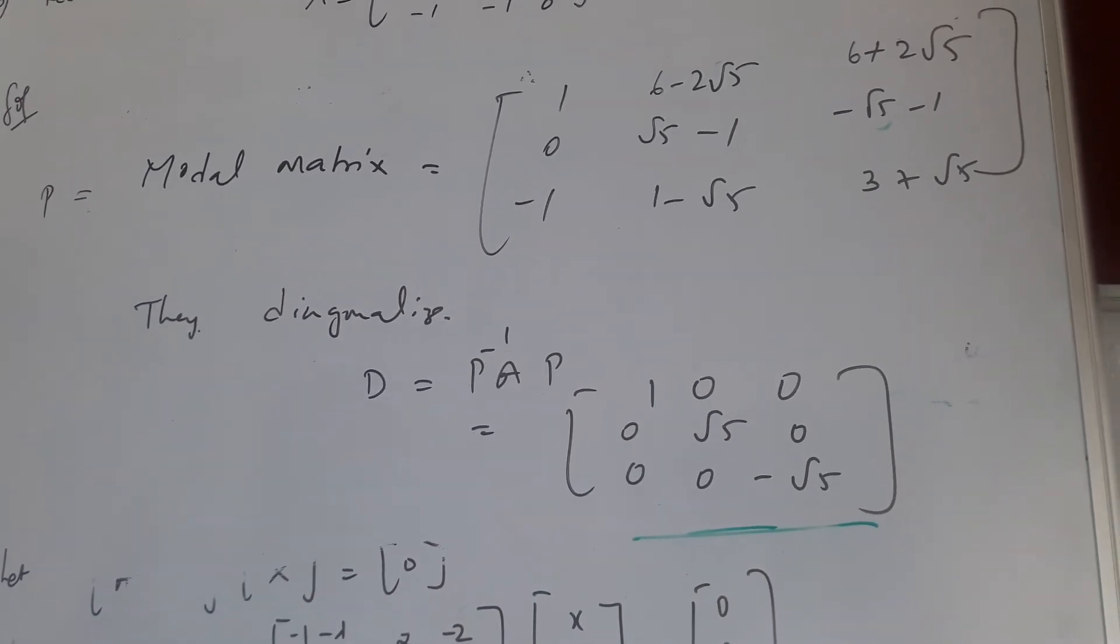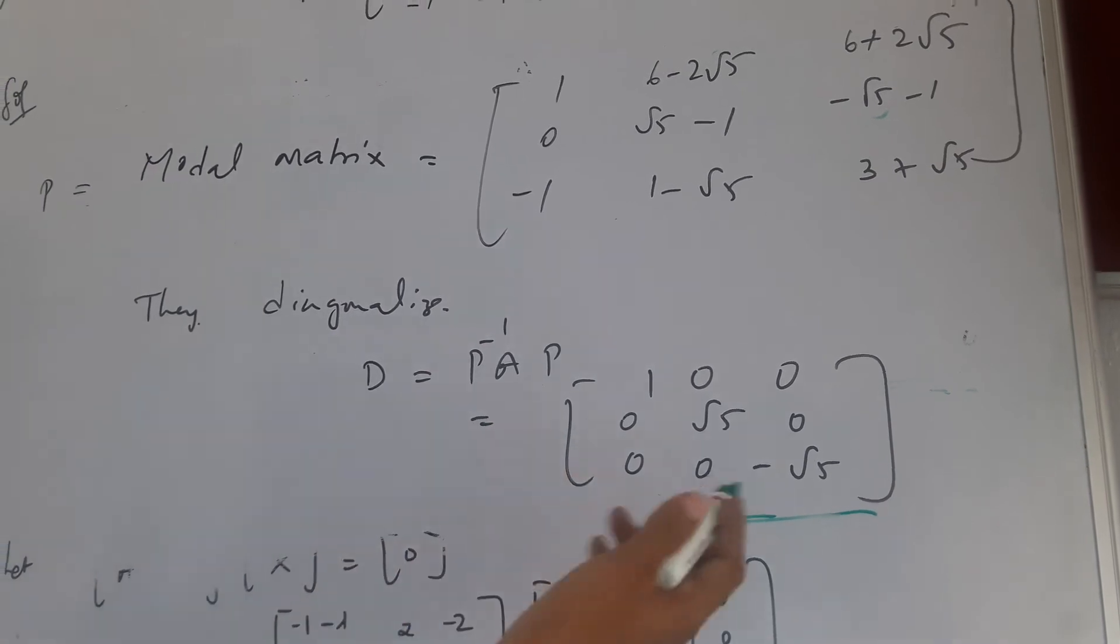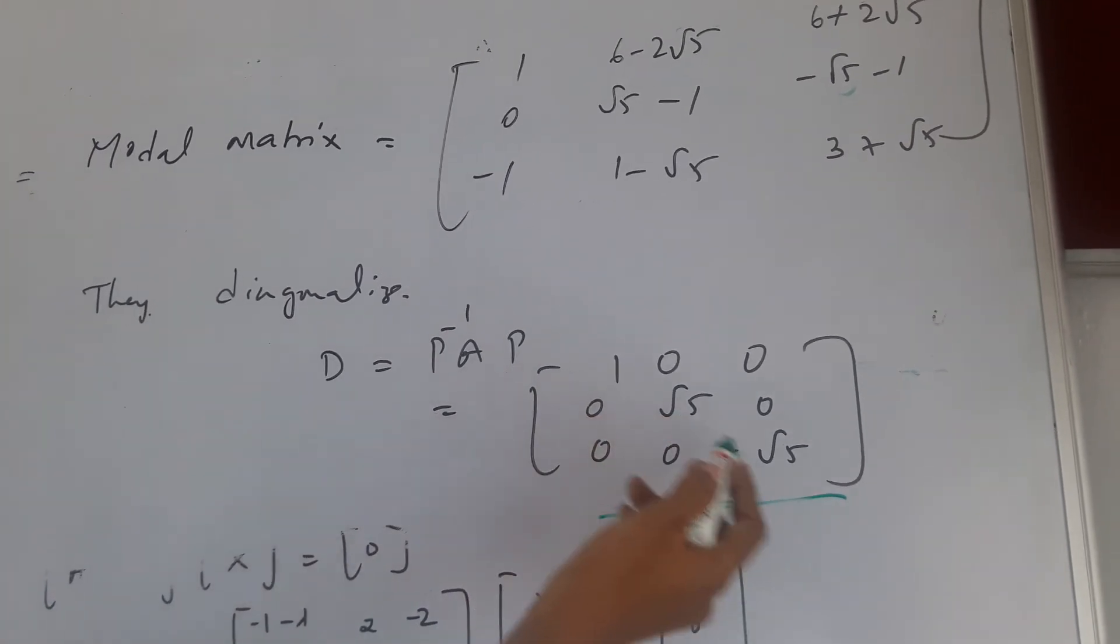D equals P inverse A into P, which results in 1, 0, 0, 0, root 5, 0, 0, 0, root 5. These are the eigenvalues which is 1, root 5, and minus root 5.